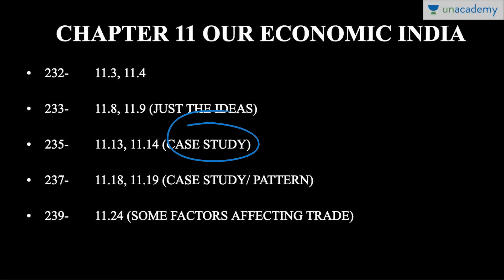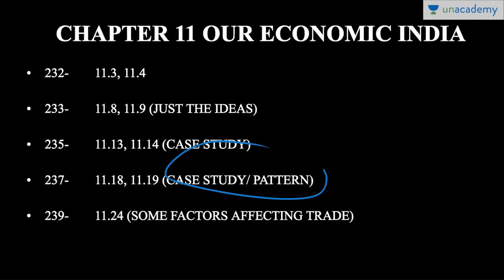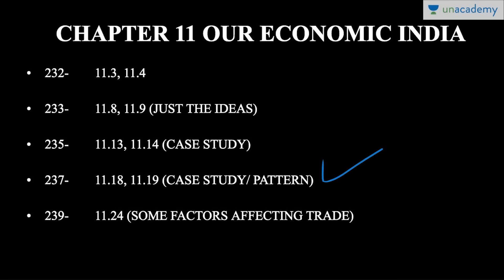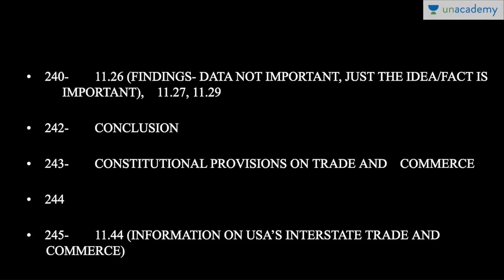On page 237, paragraphs 11.18 and 11.19 discuss case study patterns. For example, Gujarat, Maharashtra, and Tamil Nadu have a positive balance of trade, highlighting their competitive manufacturing capabilities. On page 239, paragraph 11.24 states that all these predictions are borne out by Indian data, and then discusses factors affecting trade. Moving to page 240, paragraph 11.26 presents model results: distance, state GDP coefficients, proximity coefficient, and language coefficient. The data is not important — just grasp the ideas.